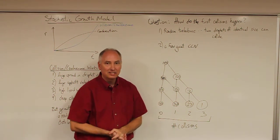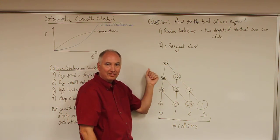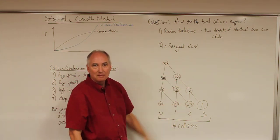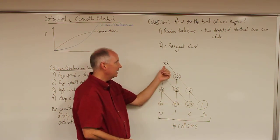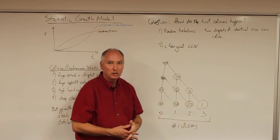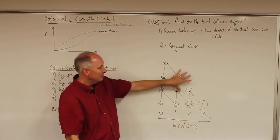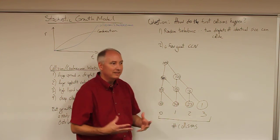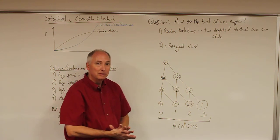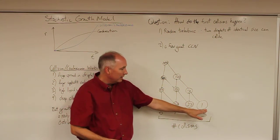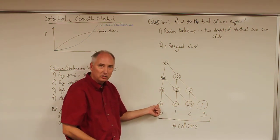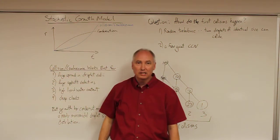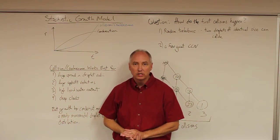Of course, the real problem with the stochastic model is that we don't know what the likelihood is that droplets will undergo a random turbulence event. Ten percent was used here, but that is probably way too high — the likelihood of two droplets colliding due to random turbulence could be much, much lower, which would make the formation of the initial collector droplet that much more difficult. Nevertheless, this stochastic model can generate a collector droplet in an otherwise uniform field of cloud droplets, jumpstart the collision coalescence process, and lead to precipitation formation in relatively short order.